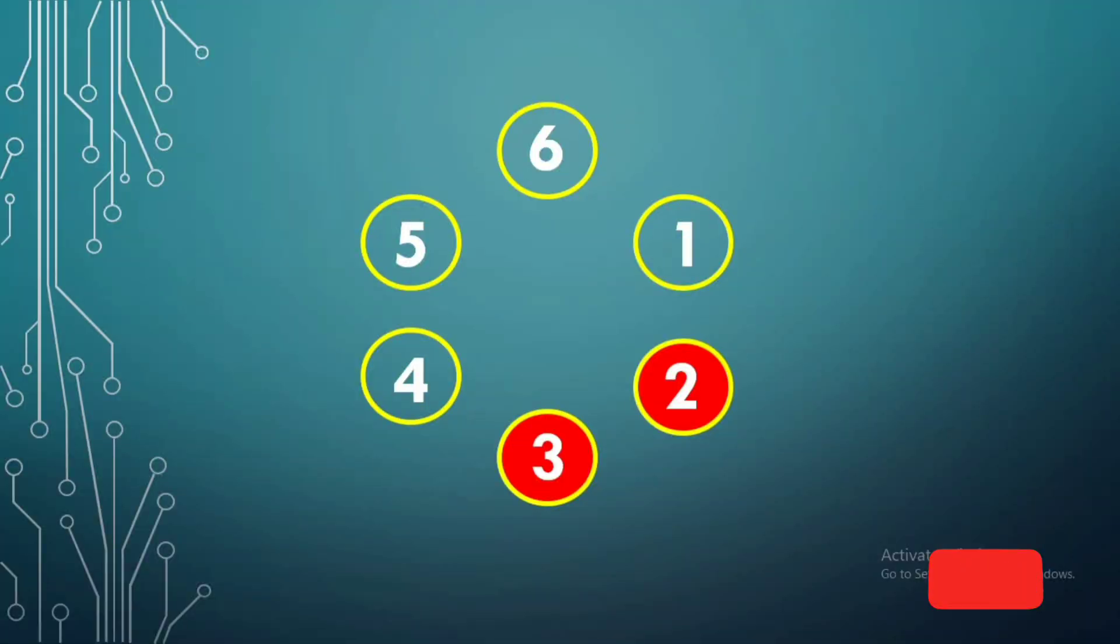For example, if a car wants to park at position 2 but position 2 and 3 are already taken while position 4 is empty, then the car will be parked in position 4. Another example, if a car wants to park at position n but position n is already taken while position 1 is empty, then the car will be parked in position 1.